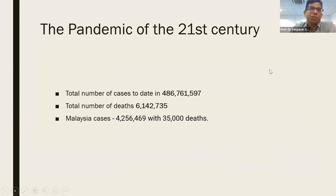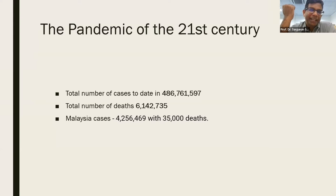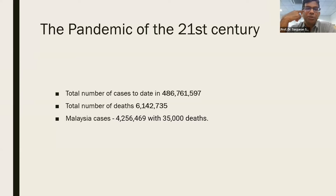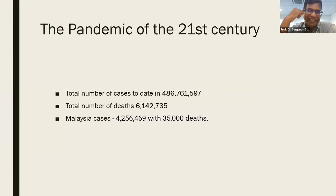These numbers are a bit of an underestimate, but the total number of cases to date, we are reaching 500 million. For a little bit of context, 500 million was the number of people who contracted the Spanish flu back in 1918, and the deaths in that were coming up to 50 million, some say up to 100 million. The planet has done really well in containing this disease. In Malaysia, unfortunately, we have had about 35,000 deaths, but the numbers are much less now, in keeping with the endemic phase.